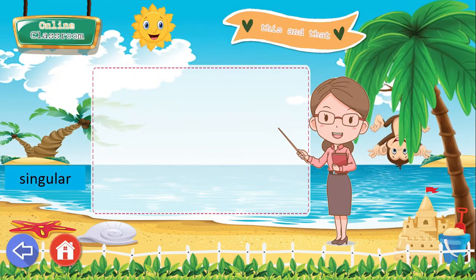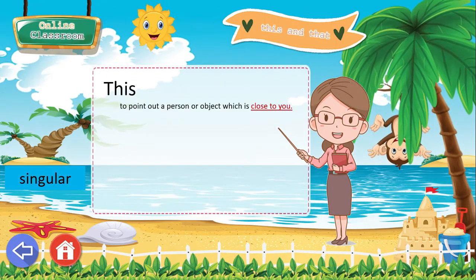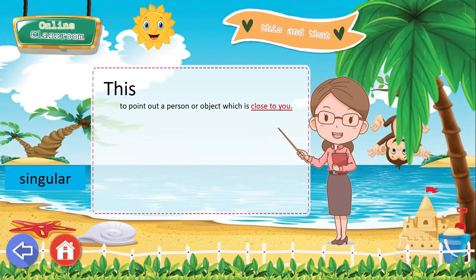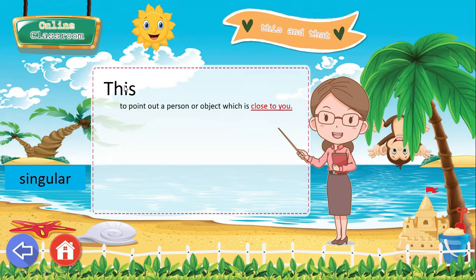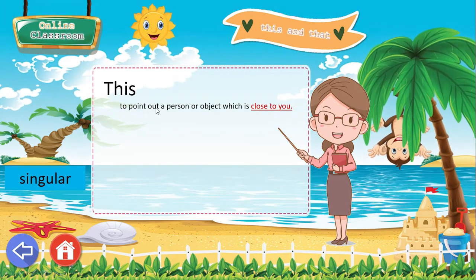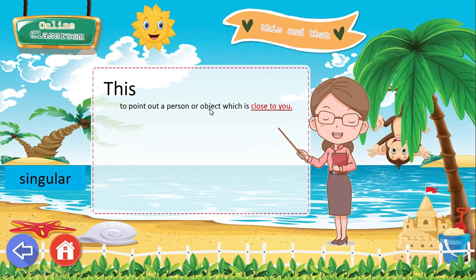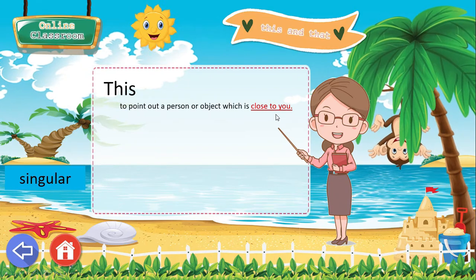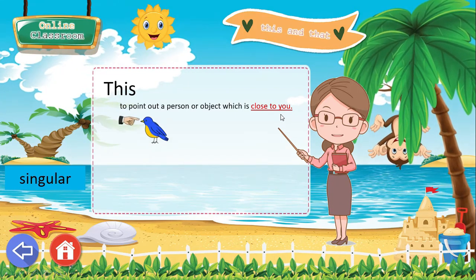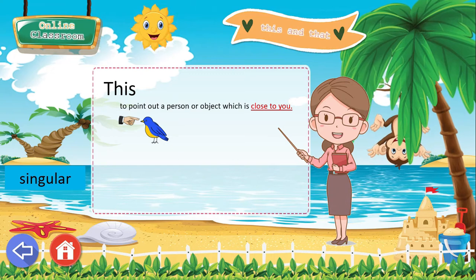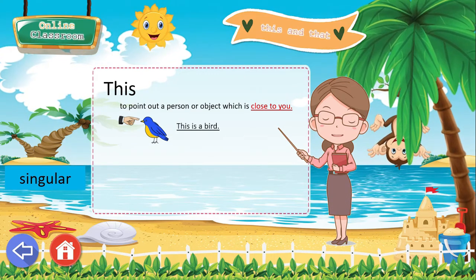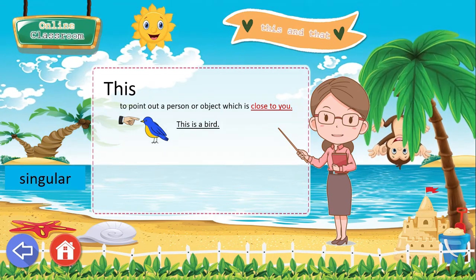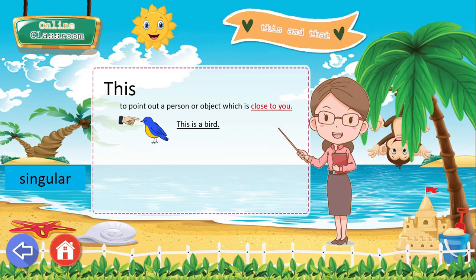This and that. You are going to use the word 'this' — that's T-H-I-S — to point out a person or object which is close to you. For example, we have here a bird. You can answer: This is a bird.